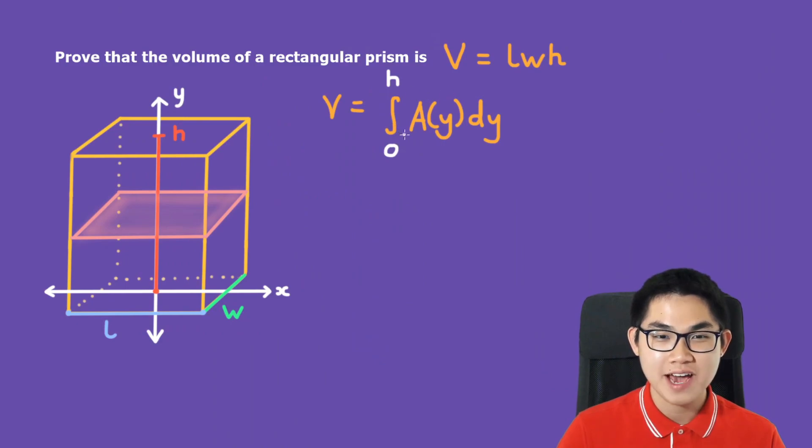The second step is to find A of Y, and A of Y is the area of the cross section. Since our cross section is a rectangle, the area of the rectangle is L times W. Let's go ahead and put it back into the formula.